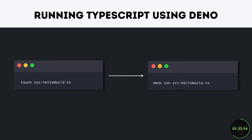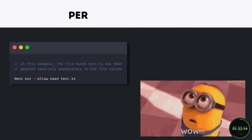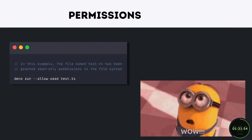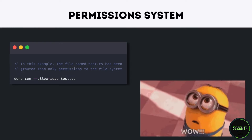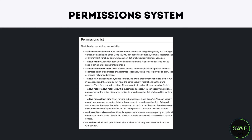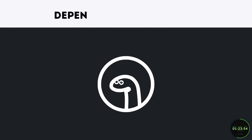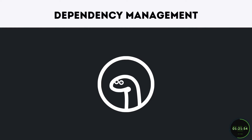Another feature that makes Deno stand out is its permission system. Deno is secure by default, which means unless you specifically allow it, a program run with Deno has no file, network, or environment access.